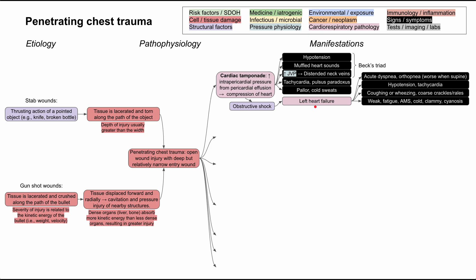Left heart failure is when your left ventricle is failing to pump forward. Blood backs up behind the left ventricle, causing fluid in the lungs. This results in acute dyspnea and orthopnea — shortness of breath that's worse when lying on your back because gravity no longer keeps fluid away from the majority of the lungs. You can also have hypotension, tachycardia, and coughing and wheezing with coarse crackles and rales on lung exam.